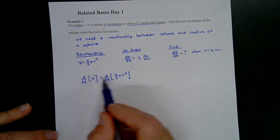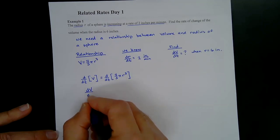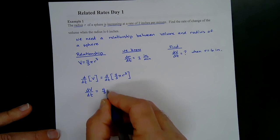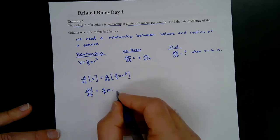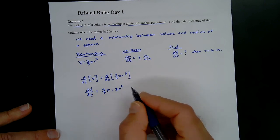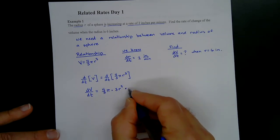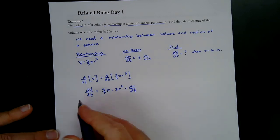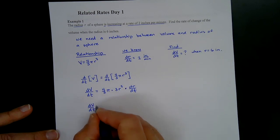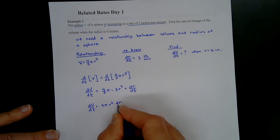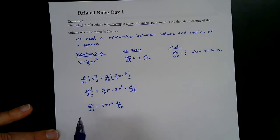The left side becomes dV/dt. On the right, four-thirds and pi are constants, so we get four-thirds pi times three r squared. But we're differentiating with respect to time, not radius, so we must apply the chain rule — that gives us times dr/dt. Cleaning up, the threes cancel: dV/dt equals four pi r squared times dr/dt.